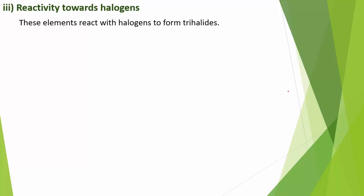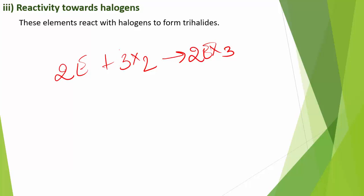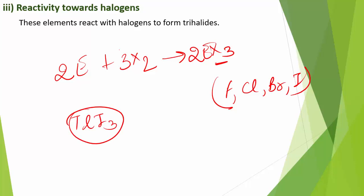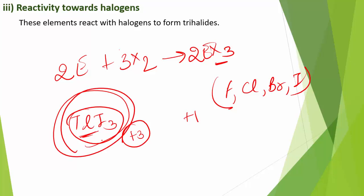Group 13 elements react with halogens to form trihalides EX₃. One exception is thallium iodide — in other thallium trihalides, thallium is in the +1 oxidation state, while iodine exists as the triiodide ion I₃⁻.